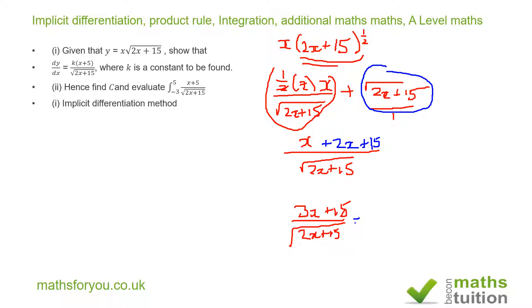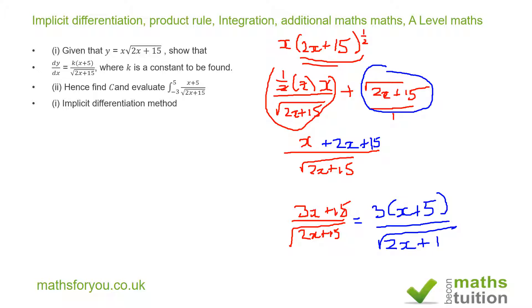This gives us 3 times x plus 5 divided by the square root of 2x plus 15, in which case the constant k equals 3. So our k is 3.